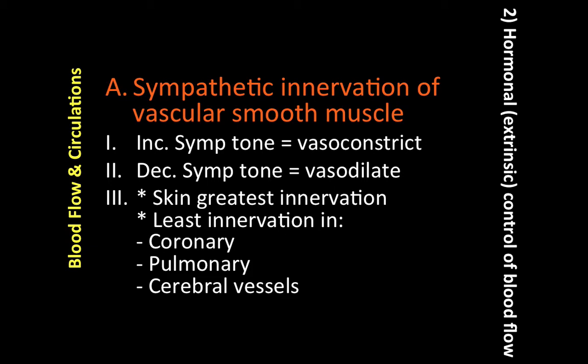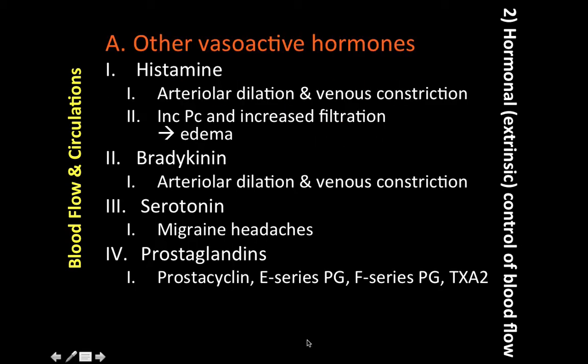Moving on to other vasoactive hormones — there are four important ones in this extrinsic pathway: histamine, bradykinin, serotonin, and prostaglandins. Let's talk about each one in detail.